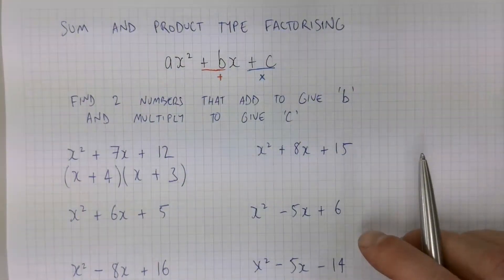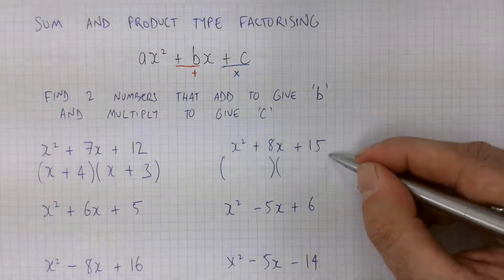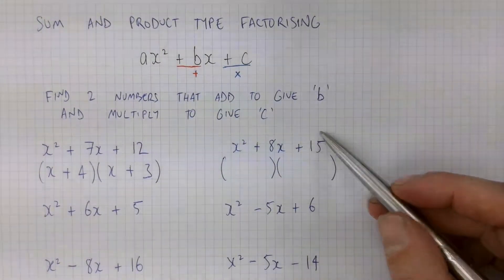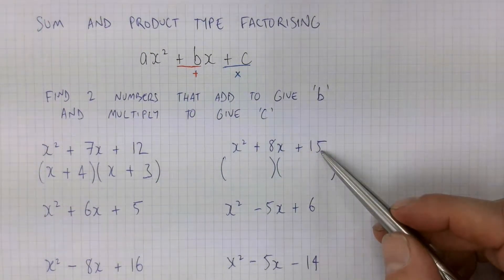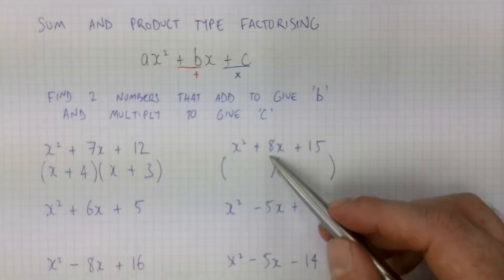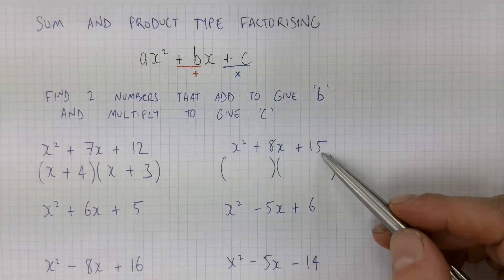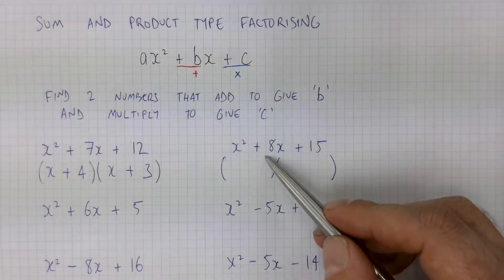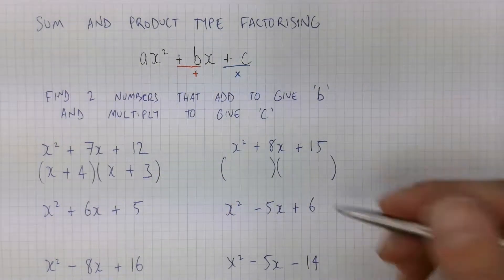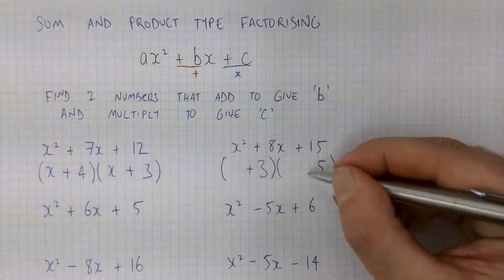Jumping to the second example, we set up two brackets again. What two factors multiply to give 15? 15 and 1 give 15, but 15 + 1 = 16, and we need them to add to 8. Another two factors of 15 are 5 and 3, and 5 + 3 = 8, so those are the two numbers. We put 3 in one bracket and 5 in the other — both positives — and x goes at the front.